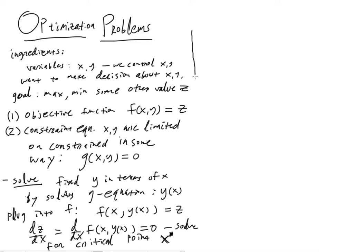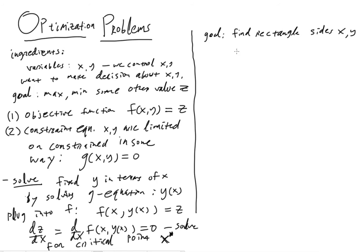I'm going to give a first example using the simplest possible case. The goal here is to find a rectangle with sides x and y — here's our rectangle with a base of x and a height of y — with maximum area.